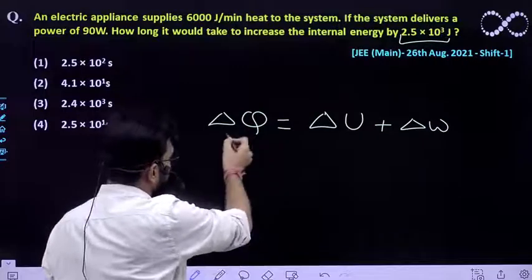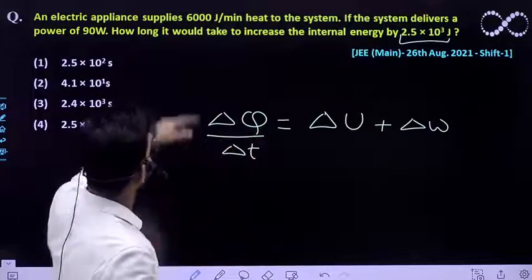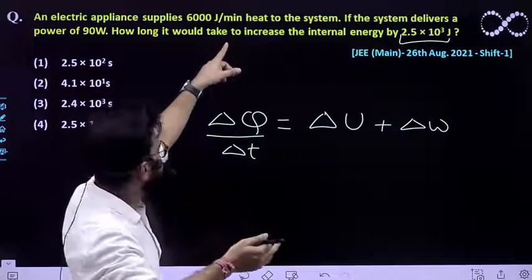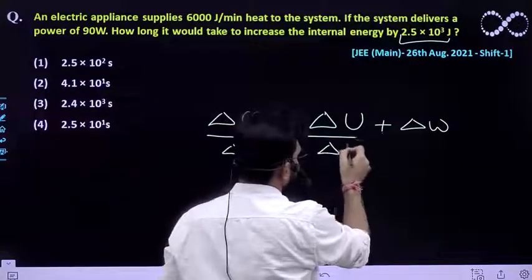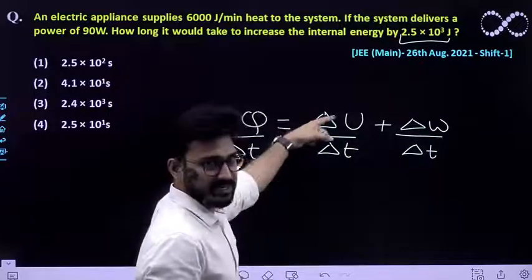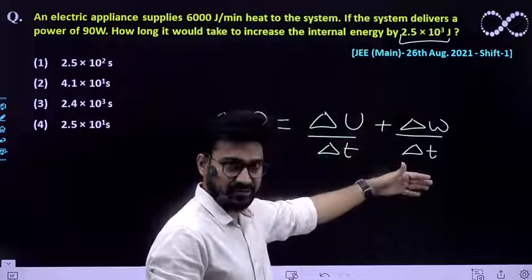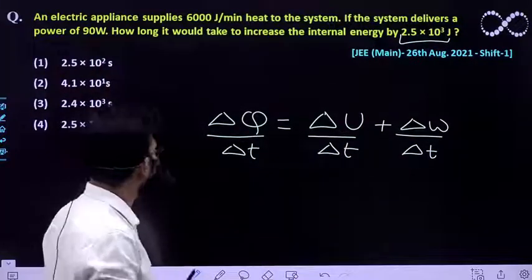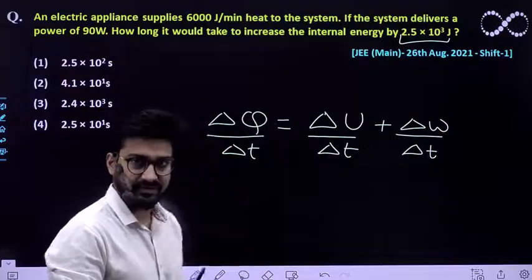The heat supplied per minute is given as 6000 Joules per minute, which needs to be converted into seconds. Per unit time, this relates to the change in internal energy per unit time plus the work done by the system per unit time, which is already given as 90 watts. We will put in all the values and find the value of delta T.